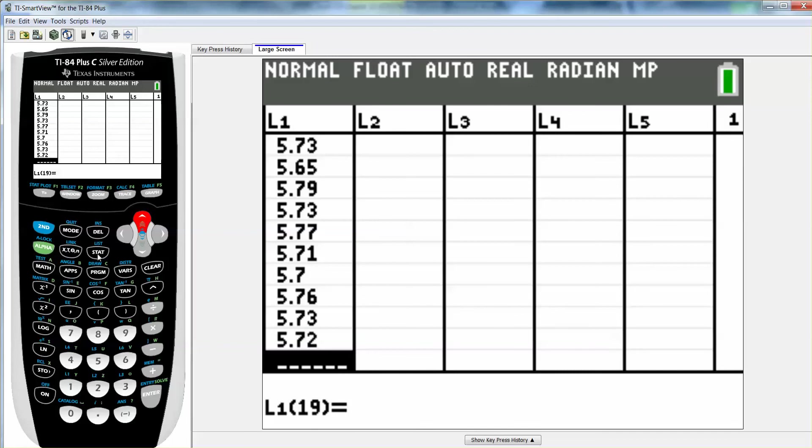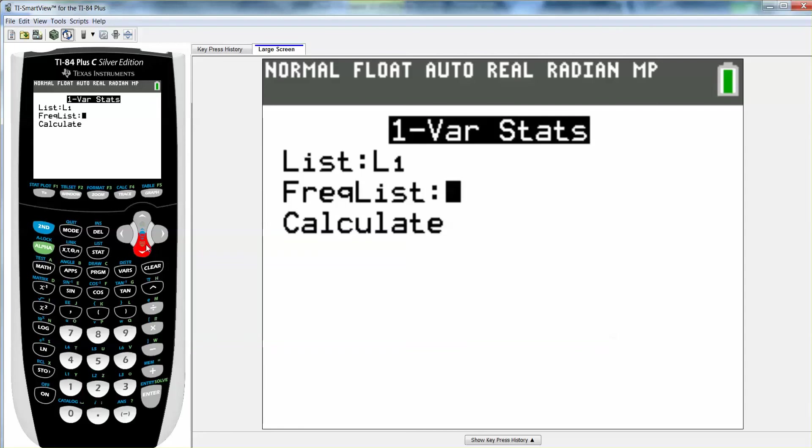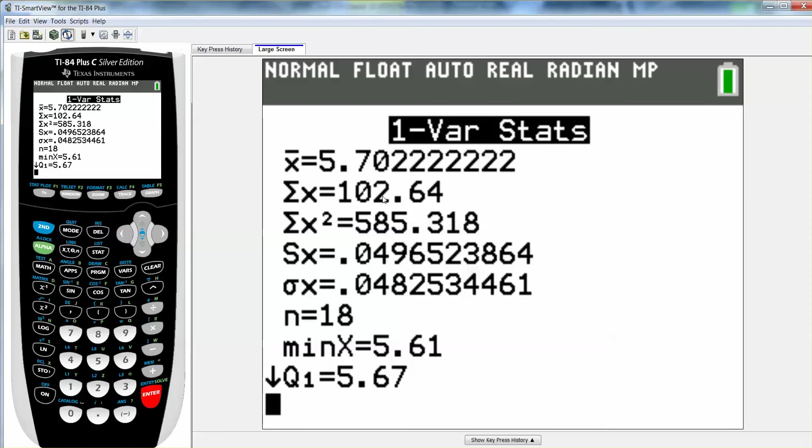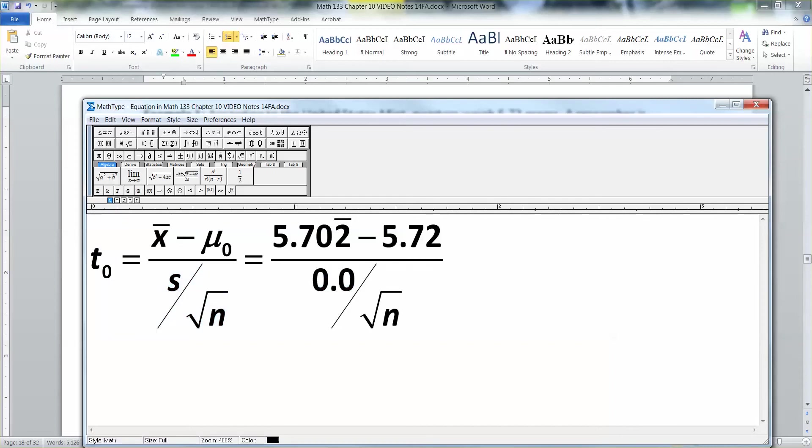All right, I have all the numbers typed in now. So I'm going to go to stat, calculate, one variable stat. I want L1 to be my list. I want to leave the frequency list blank because we only use that for weighted means and for expected values in Chapter 6. There I can see it's 5.702 and 0.04965. Remember, we want the s value. We don't know what sigma is. All right, so I will type those numbers into my formula. So this was 5.702 repeating technically because the two repeats. And then it's over s over the square root of n. S was 0.04965 and n was 18.